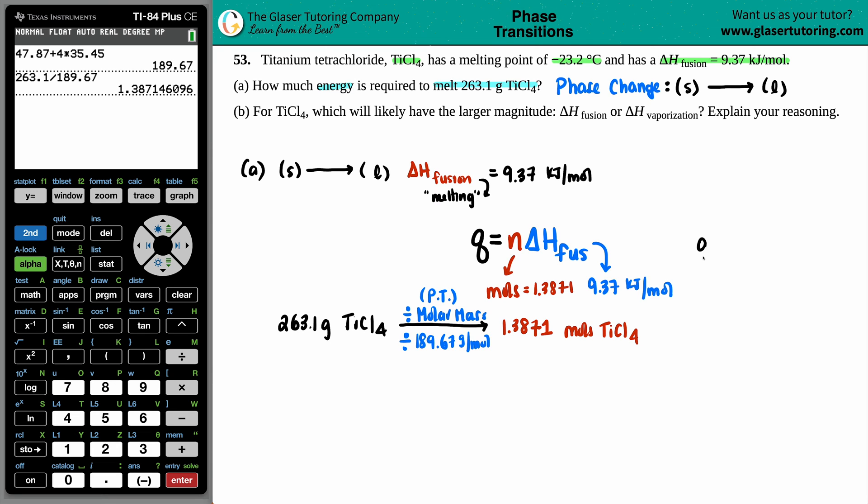I guess we'll put it over here. Q equals N times the delta H. So, we have 1.3871 times the fusion value, 9.37. Q equals, how much heat energy is that going to be? 1.3871. Actually, technically, we shouldn't really round here. So, I'm just going to bring the whole number down. But chances are, if you just, if you plug in this number, or if you plug in the whole number, the answer is really not going to change much. Times the 9.37.